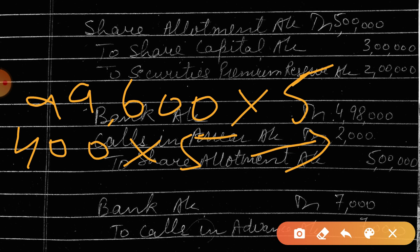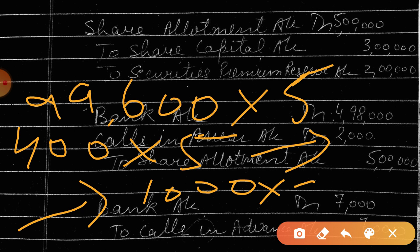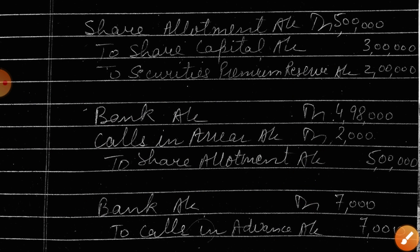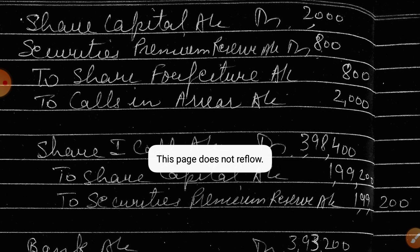1000 shareholders have paid the entire amount. So my next entry will be bank account debit to calls in advance account. The amount: 1000 shares at 7 rupees — because 4 rupees on first call and the remaining 3 rupees on second and final call, paid at the same time. Shares were forfeited — here is the entry. Can you tell me how many amount was called from Kumar? It was 2 rupees on application and 3 rupees on allotment.